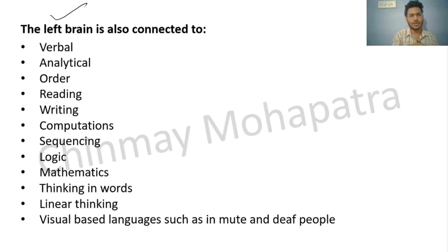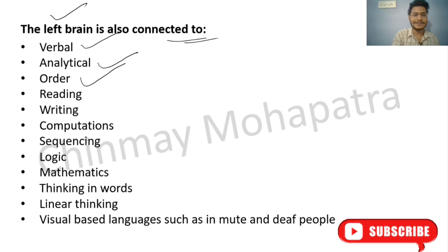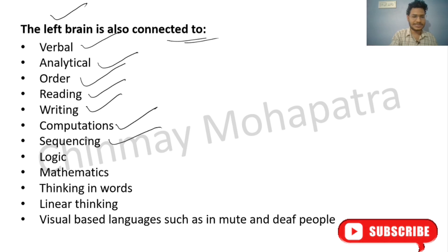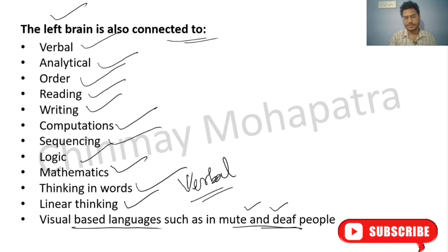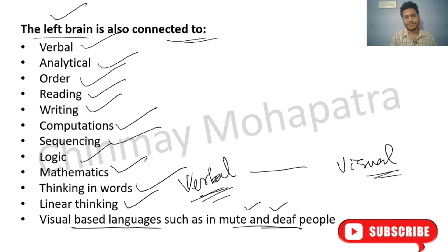In detail, the left brain is connected to verbal and analytical thinking. It controls verbal, analytical, and orderly thinking, including reading, writing, computing, calculation, sequencing, logical thinking, mathematics, and verbal thinking. It also handles visual-based languages such as those used by mute and deaf people. The right brain handles visualization, imagination, and creativity.